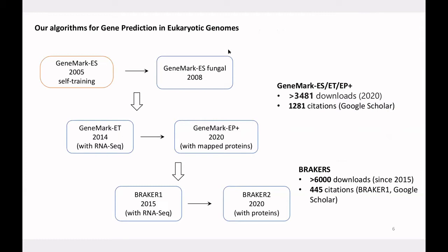To solve the problem of eukaryotic gene prediction, we have developed several prediction algorithms. These start from GeneMark-ES, which predicts genes from sequence alone, up to GeneMark-EP+ which can incorporate RNA-seq data and homologous proteins. We also have the BRAKER family of algorithms, which combine GeneMark with AUGUSTUS — another gene prediction tool — combining the strengths of both to achieve better prediction. All of these tools are quite popular and used by many users worldwide.